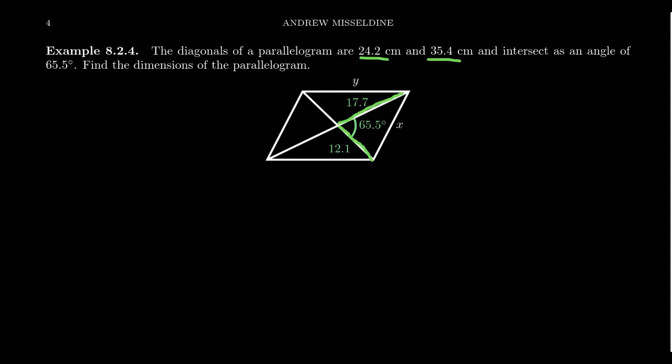And suppose that the angle between the two diagonals is 65.5 degrees, as illustrated here in the diagram. With this information in mind, can we figure out the dimensions of the parallelogram? Can we find the sides of the parallelogram? Let's actually start with this side right here, which we'll call a dimension X.